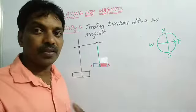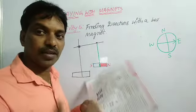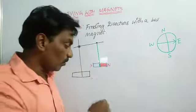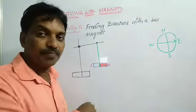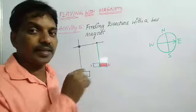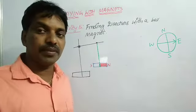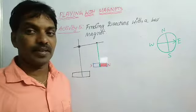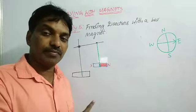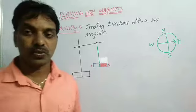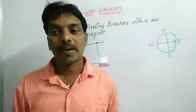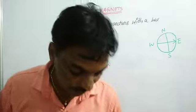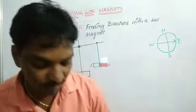This side is north and that side is south. When it comes to rest, we have to keep a mark on that area — not on the magnet. Again we disturb it, and after some time it will come to rest in the same direction. Will it happen or not? No doubt it will. Once again I will do that with this bar magnet.